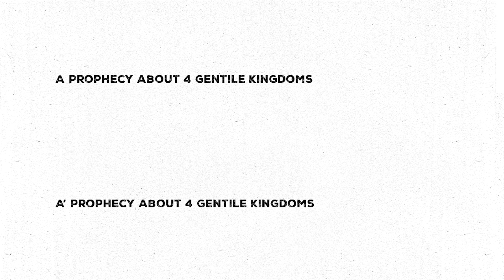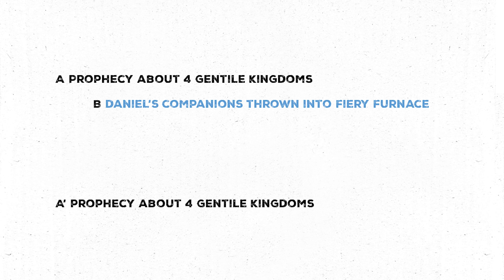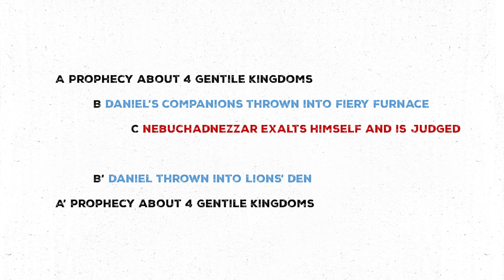In the Bible we don't just have individual stories but also cycles — several stories grouped together to form a larger unit, like the stories of Abraham in Genesis or the stories of Elijah and Elisha in Kings. These cycles can also be arranged as chiasms. In Daniel 2–7, there's a prophecy about four Gentile kingdoms in chapter two and another in chapter seven. In Daniel 3, the three companions are thrown into the fiery furnace but saved by God; in Daniel 6, Daniel is thrown into the lion's den and also saved. That leaves chapters four and five, where in both cases a Babylonian king exalts himself and is judged by God, with Daniel functioning as interpreter in both. So it's clear the author intentionally arranged this material as a chiasm.